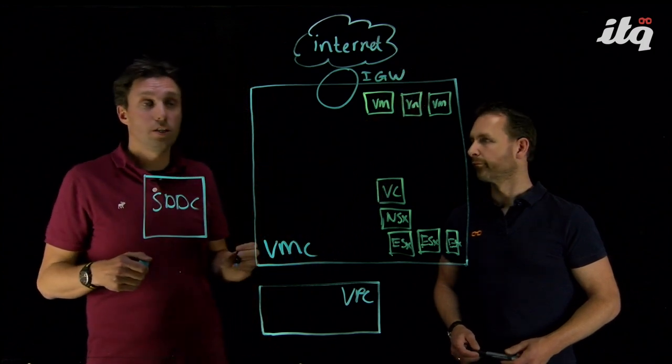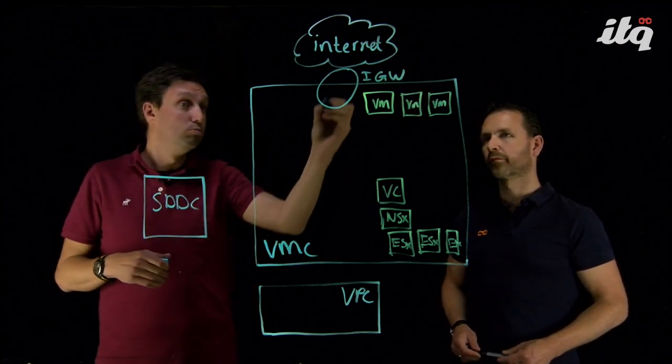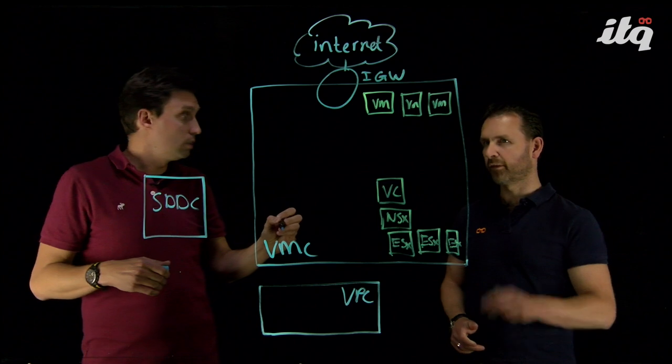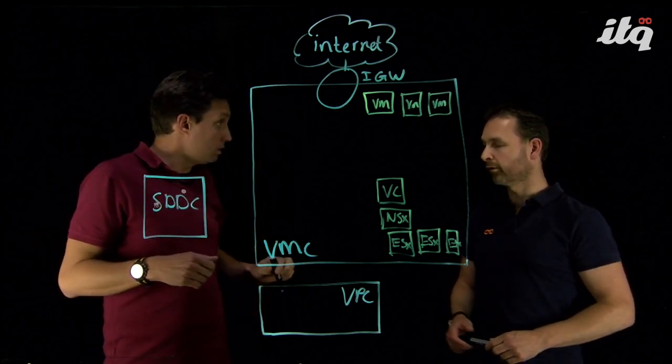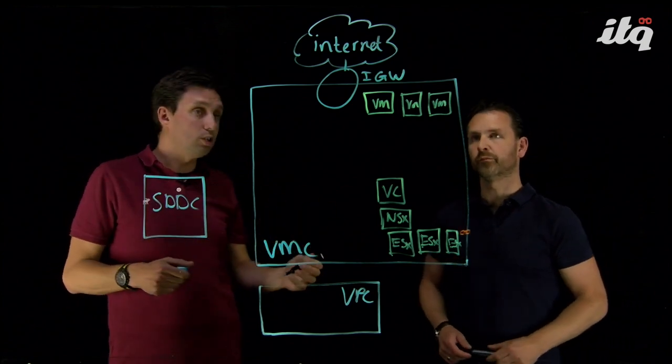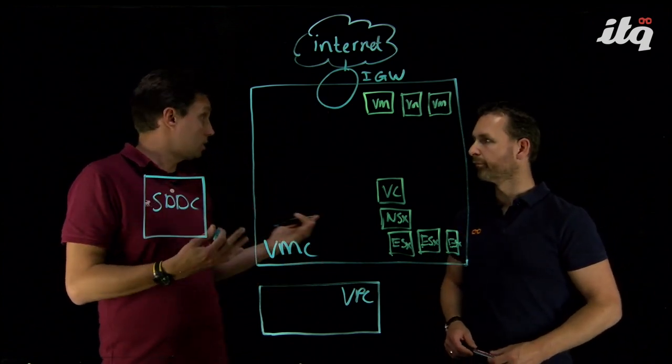So, what we have here on top of this diagram is our internet gateway. And this component is responsible for the connectivity to the internet. Is that an NSX-T component or is it a... That is actually an AWS component. A native construct. A native construct, but we will connect it to NSX later on.